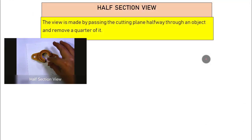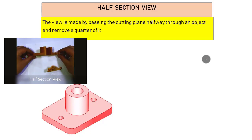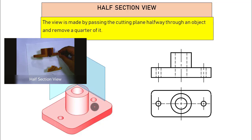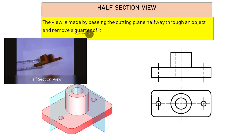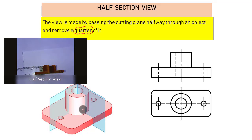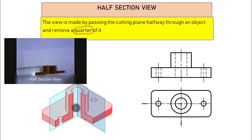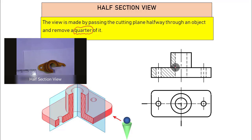Half section view is made by taking a quarter of the object — imagine splitting the object into four pieces and removing one quarter. When you project the remaining object in front of you, you see two halves: one showing the internal view and one showing the external view. Use half section when the part has a symmetrical shape. You can still do a full section, but the exam may specifically ask for a half section.